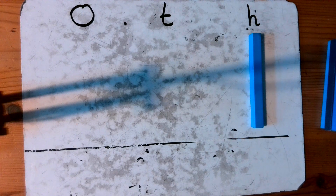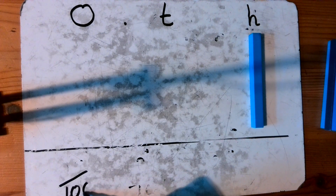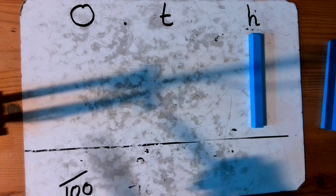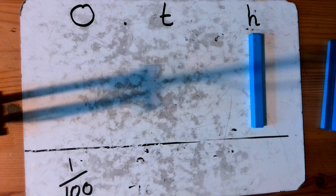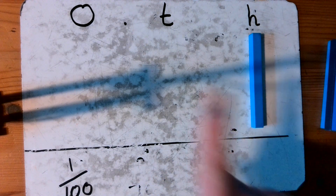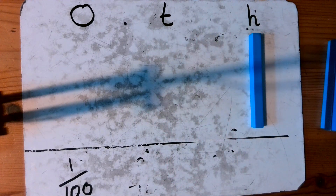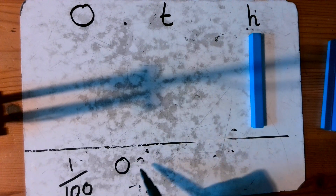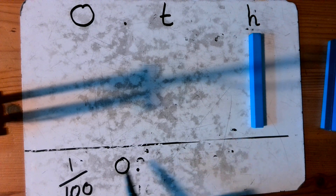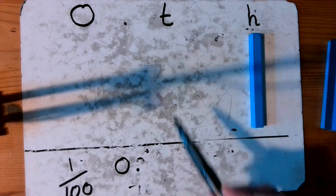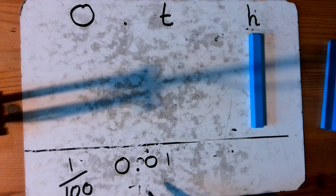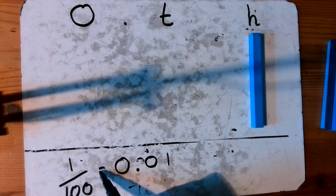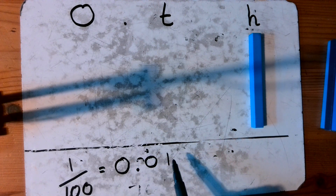I'm going to take my one hundredth here. To write that as a fraction I know my denominator is going to be a hundred. I have taken my whole and split it into a hundred equal parts, so here I have one hundredth. To write that as a decimal number I use place value: I have no whole numbers, the decimal point shows we're working in fractional decimals, I have no tenths, but I do have one hundredth. So one hundredth is equivalent to zero point zero one.